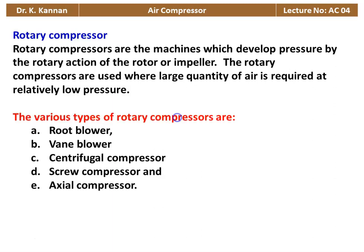The rotary compressor has different types: root blower, vane blower, centrifugal compressor, screw compressor, and axial compressor. The root blower, vane blower, and screw compressor are called positive displacement machines, whereas centrifugal compressor and axial compressor are non-positive type rotary compressors.